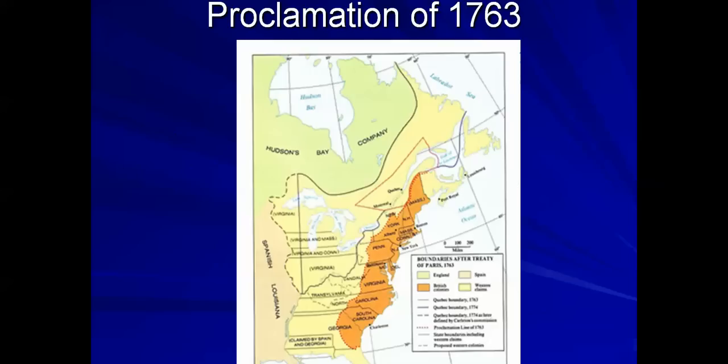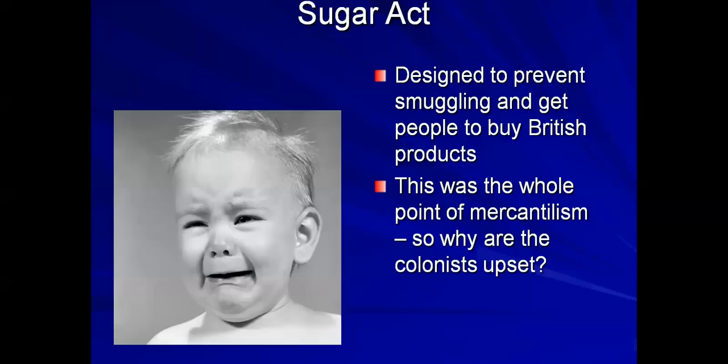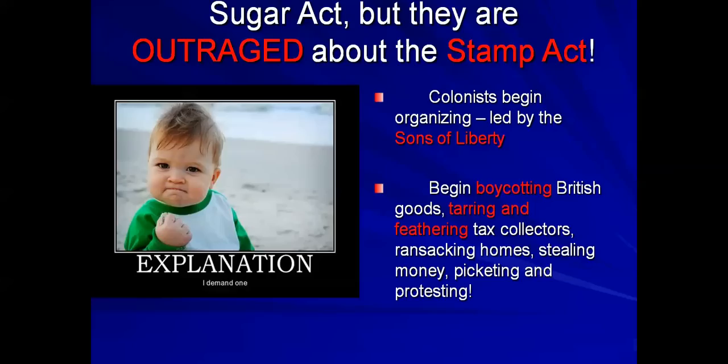The Sugar Act was the first attempt after a hundred-year period of salutary neglect to make some money from the British colonies. Since the colonists had been left alone for so long, they were not used to being regulated. The Sugar Act was designed to prevent smuggling — there was a crackdown on smuggling — and to get people to buy British products, which actually lowered the tax on molasses. However, any tax at this point was not welcome, given that the colonists had been left alone for a hundred years.